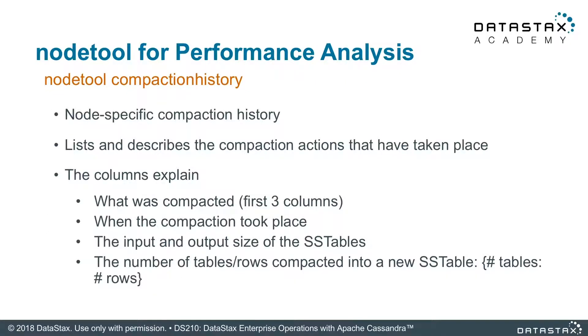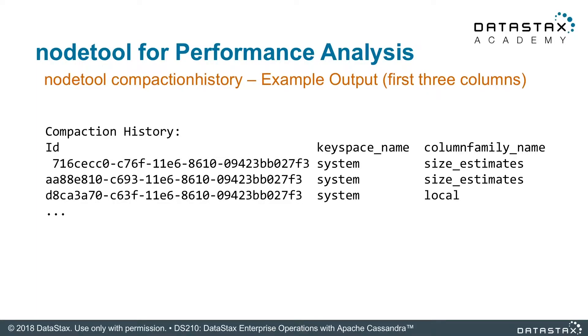Nodetool compactionhistory gives you a long tail of how compaction is running on your system. Compaction is a very important process that runs on any Cassandra node — it keeps your data fresh and up to date and maintains the sizes of your SSTables. Different compaction strategies all have to run this. The command gives you a history and lets you know the process status. If you start seeing bad things — for instance, no compaction happening — this command will let you know, and your disk might fill up quickly if you're not careful. It's a good command to have ready whenever you're worried about the compaction process.